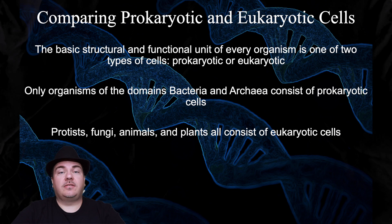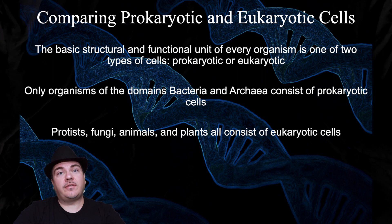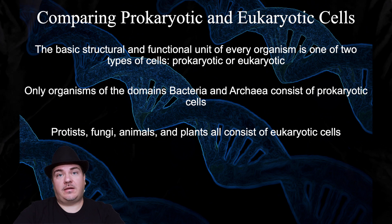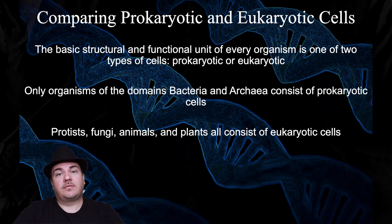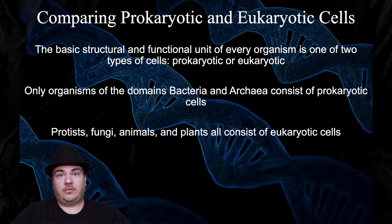The other domain is eukarya, which, for simplicity, we define as a cell that does have a nucleus. Examples of eukaryotes are things like animals, plants, fungus, and protists. So now we're actually going to learn more details about what the differences are between eukaryotes and prokaryotes.